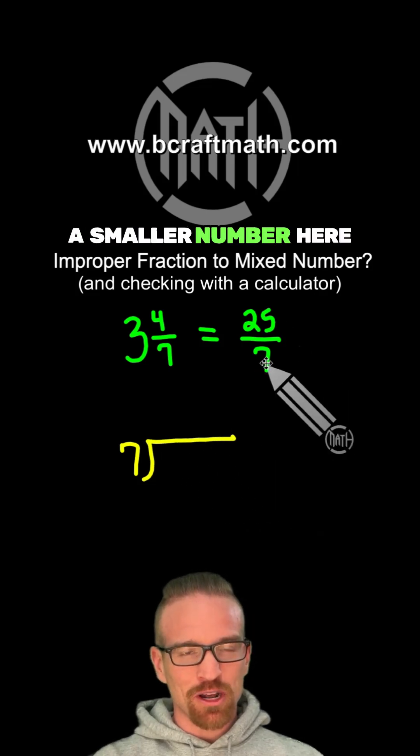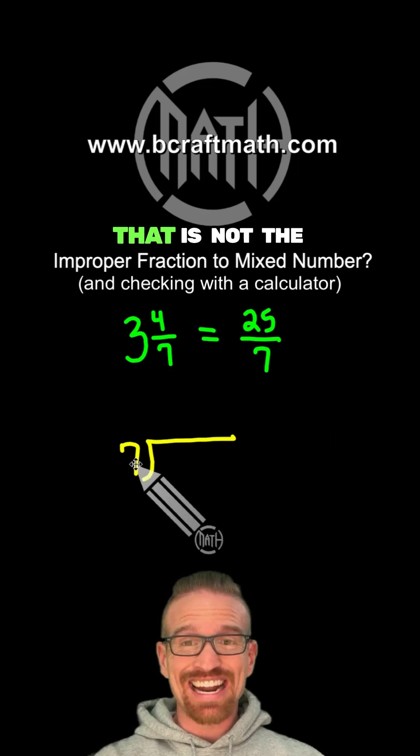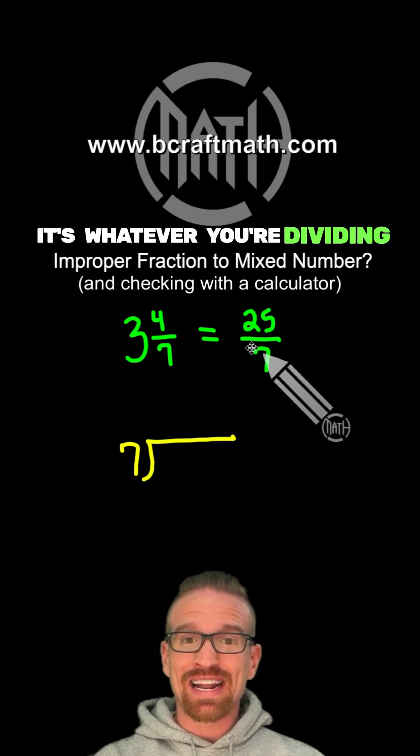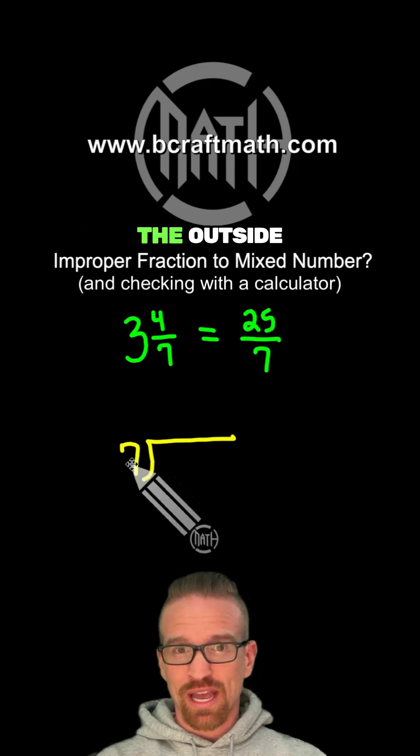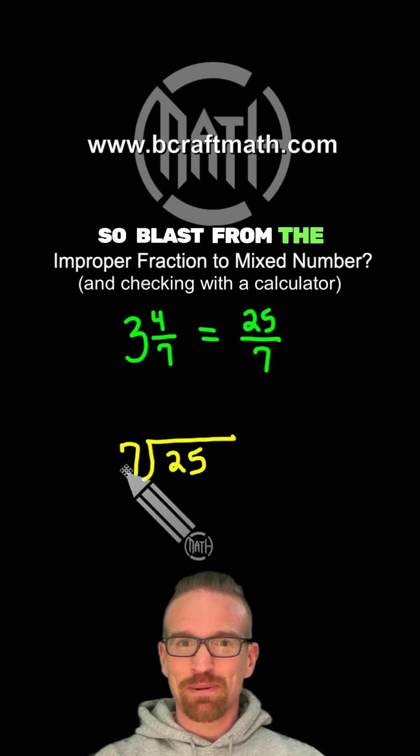Now, I know that's the smaller number here, and some students always think the smaller number goes on the outside. That is not the case. It's whatever you're dividing by, that's what goes on the outside. The 25, that's going to go on the inside. So blast from the past, long division.